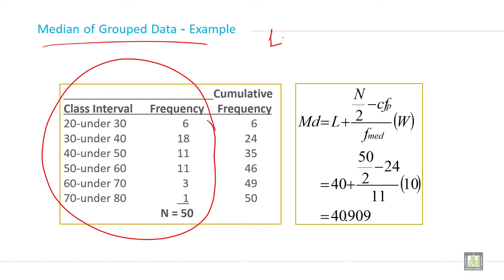What is L? L is lower limit, lower limit of middle class. N by 2, you know what is N? Sum of frequency, it is 50. So 50 by 2, it is 25. CF, CF is cumulative frequency of pre-median class. Cumulative frequency of pre-median class and F means frequency of median class and W is width or gap.